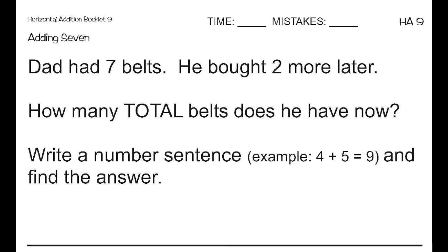First, let's look back at the question. How many total belts does he have now? The word total is a clue. When you see it in a word problem, it's telling you that you are going to add in this problem. So now let's figure out what two numbers we're adding together. Dad had 7 belts. He bought 2 more later. So the two numbers given are 7 and 2. So let's start our number sentence. 7 plus 2 equals 9. So Dad has 9 belts total.